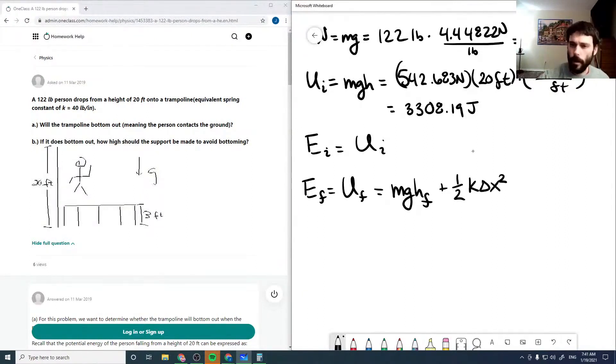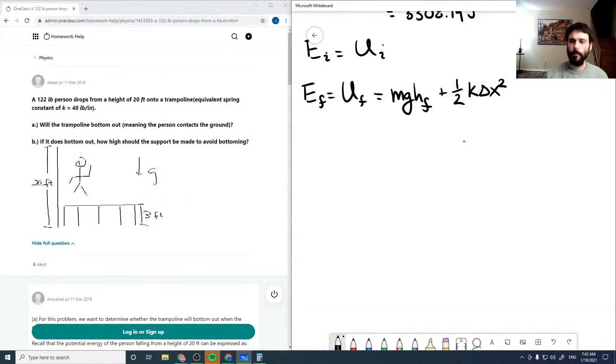So now, for delta x, if we kind of expand this a bit, so this is 3 feet and this is our height final. So this here is delta x, and so we can see that delta x is 3 feet minus our final height.